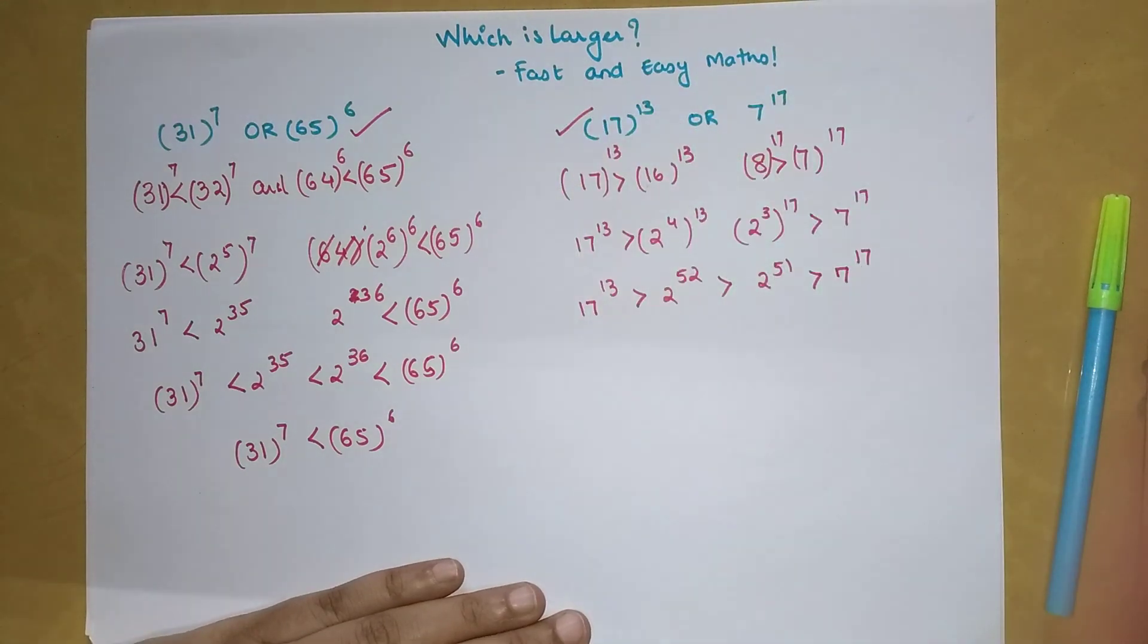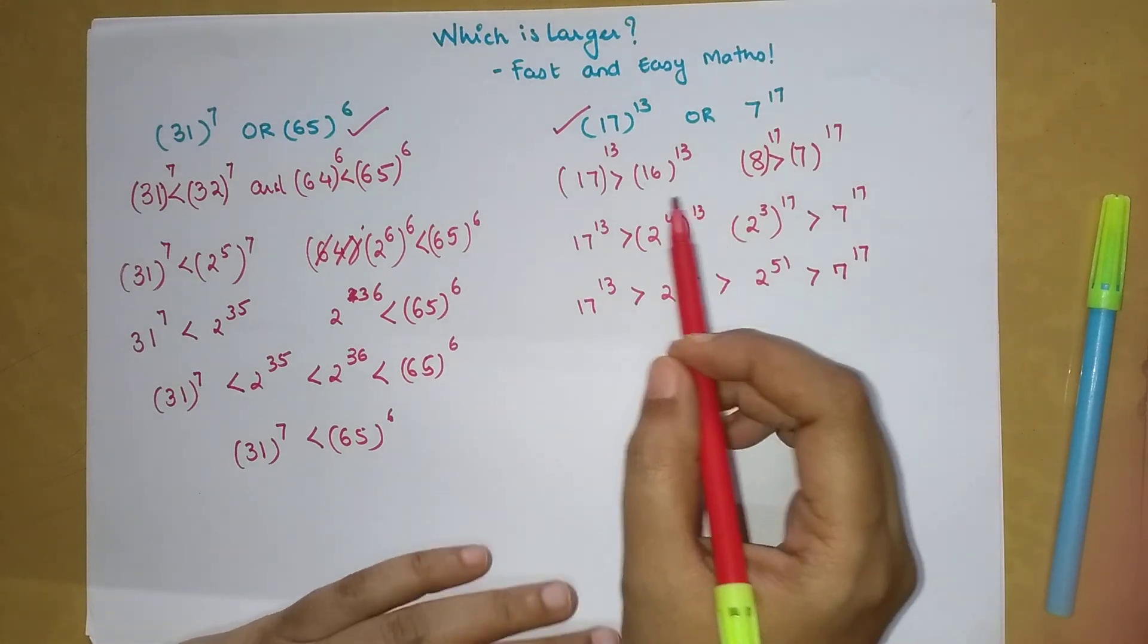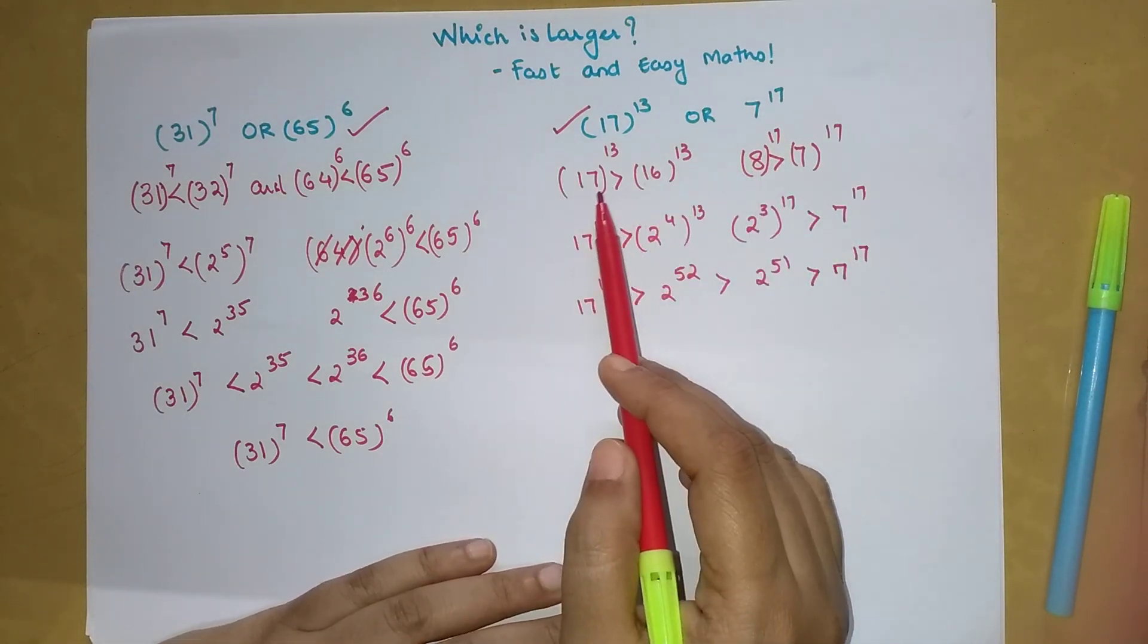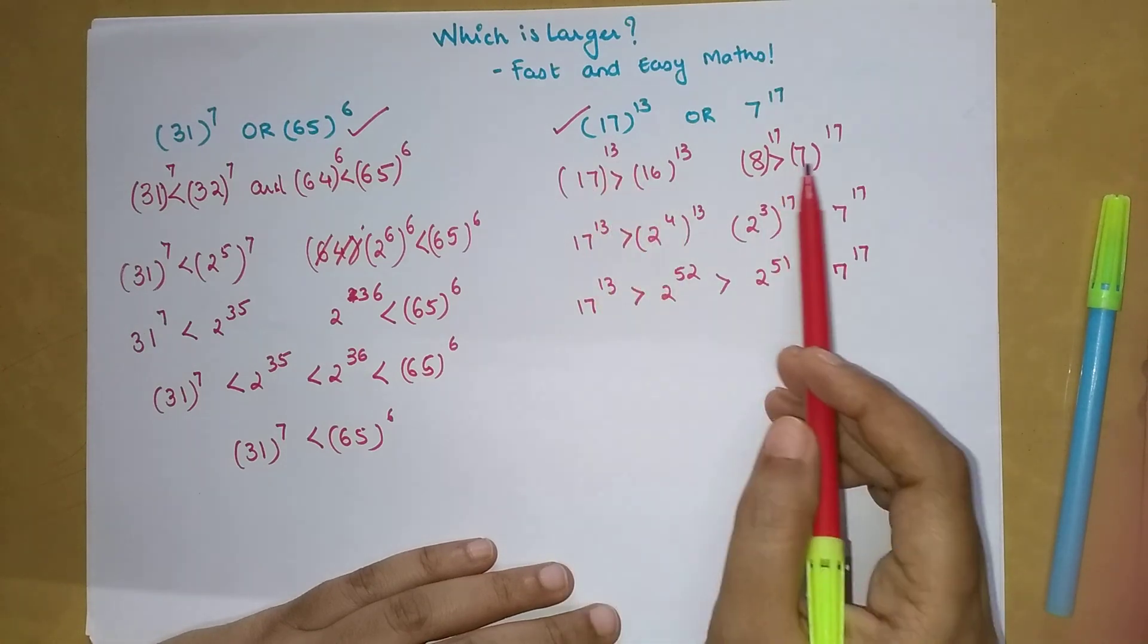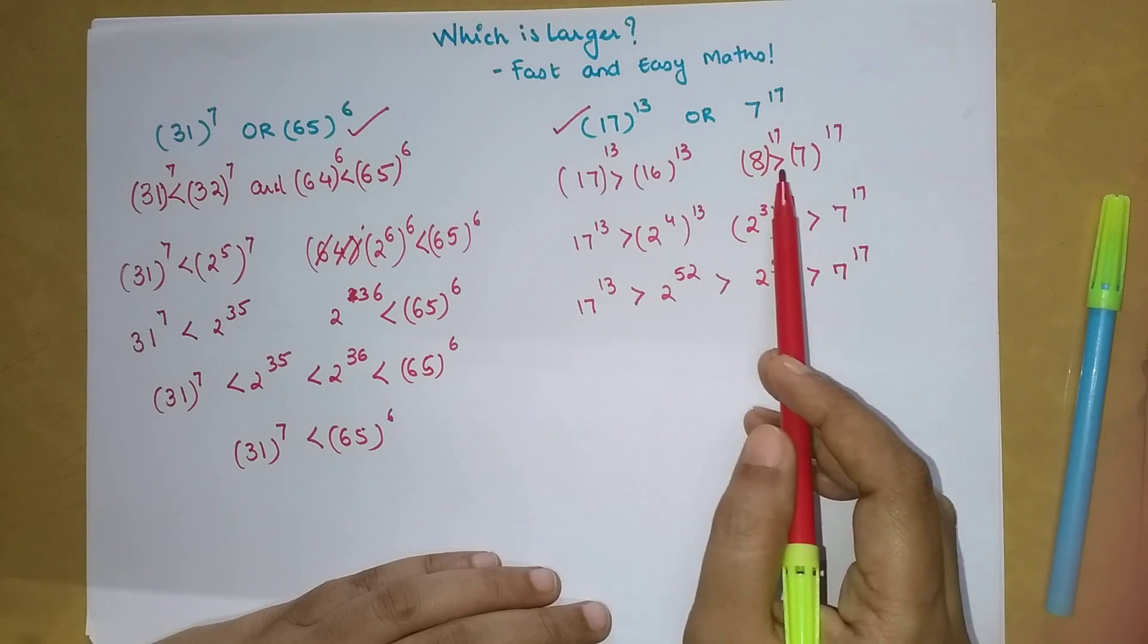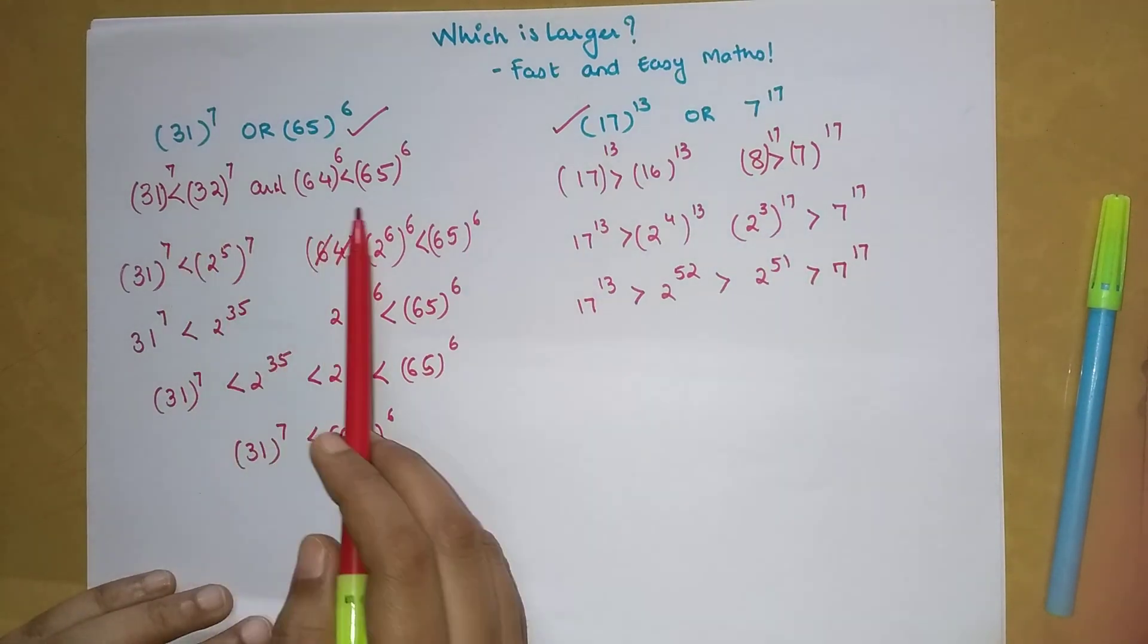Now you understood the only two tricks you need to remember: you need to make sure that the inequality sign is constant. Here I made sure that if I'm talking about the greater sign, then here also I'm arranging 8 and 7 in such a way that there is a greater sign in between. Similarly, if there was a lesser sign, here also I made sure there was a lesser sign.